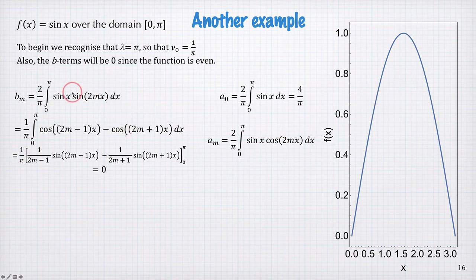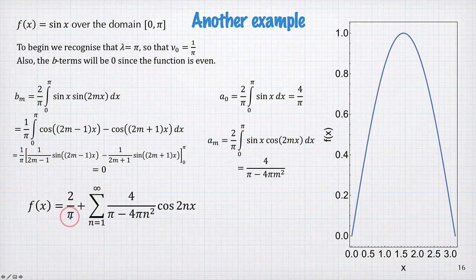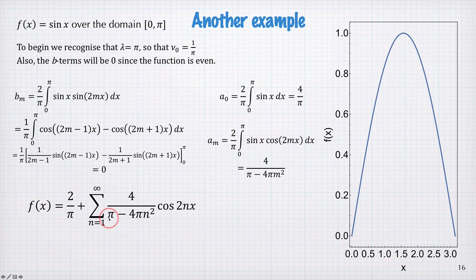Again, expanding a product of harmonics into a difference or sum of harmonics—I won't go through the details of that—but you get aₘ is equal to this quotient here, which leads us to our Fourier series, which is 2 divided by π plus this sum here.